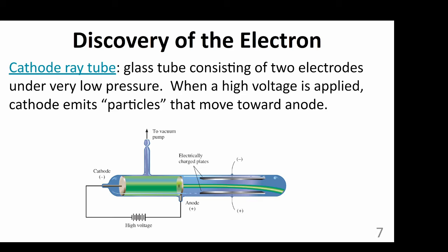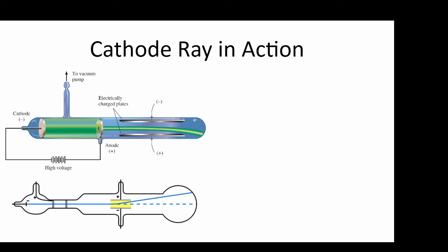Thompson used an instrument called a cathode ray tube in his experiments. A cathode ray tube is a glass tube that emits particles from a cathode that move toward an anode because of a strong voltage applied to the plates. There is a hole in the anode that allows a beam of these particles to pass through. Thompson at first didn't know what these particles were, but by passing a beam through a set of electrically charged plates, he could measure the deflection of the beam caused by the plates. The animation here shows how the beam deflects in response to the charge on the plates.